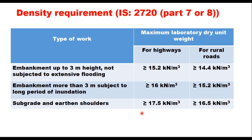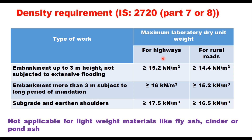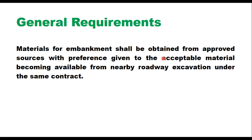The material to be used in either embankment or subgrade should be such that when compacted in the laboratory, the maximum dry density is within this range. However, these density values are not applicable for lightweight materials like fly ash, cinder or pond ash, as these densities cannot be achieved for such light materials. Materials to be used in subgrade should be non-expansive and should satisfy the requirement of CBR also as given in IS 37. Materials for embankment should be obtained from approved sources, with preference given to acceptable material from nearby roadway excavation under the same contract, ensuring the best available material is saved for the subgrade and the embankment portion just below subgrade.